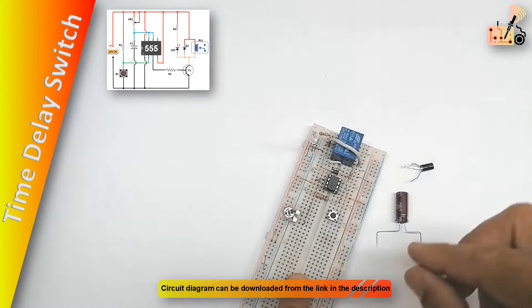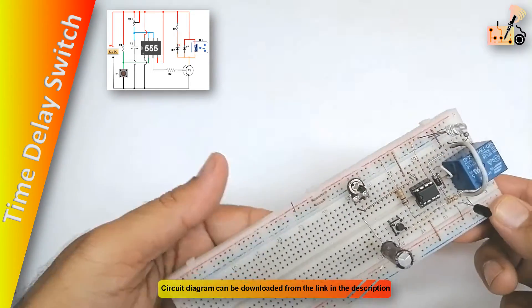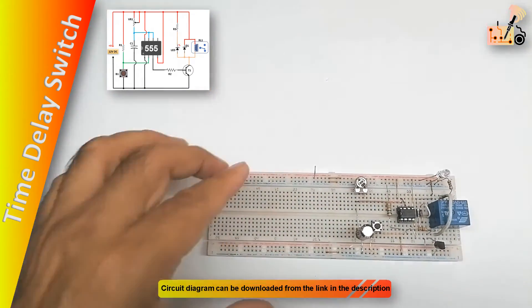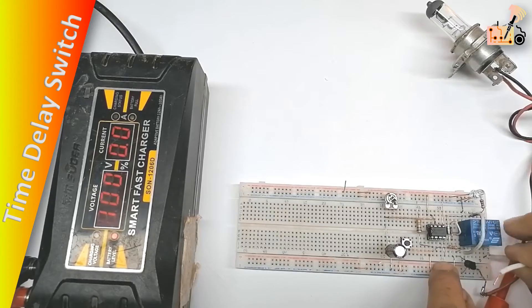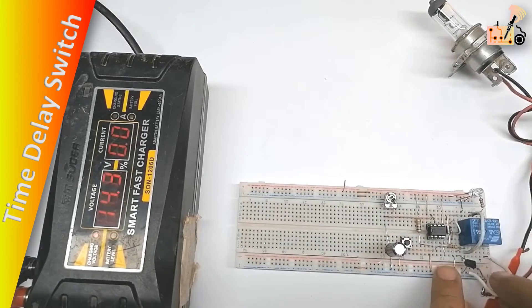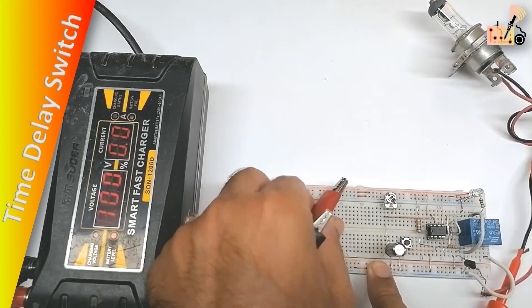After installing all the components on the breadboard, double-check the connections to ensure everything is in place. Once verified, proceed to connect the 12-volt power supply to the circuit.